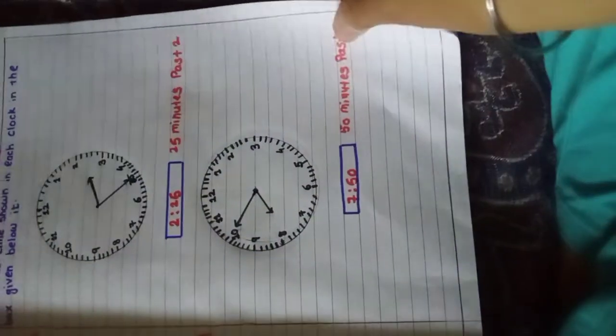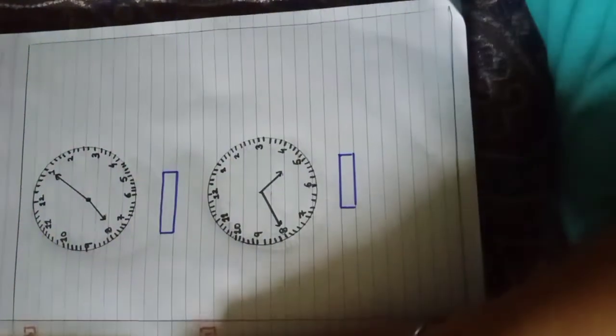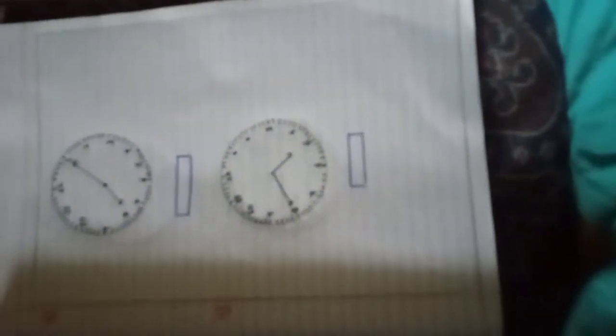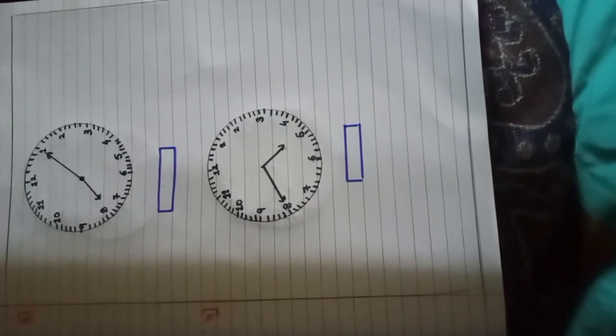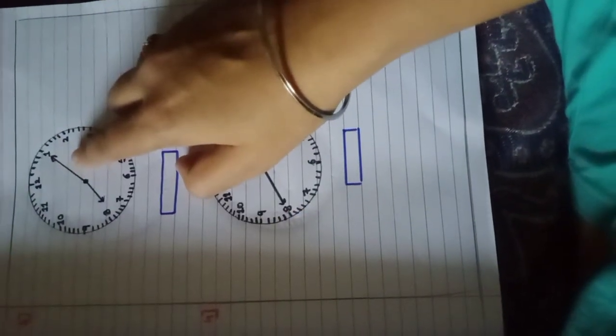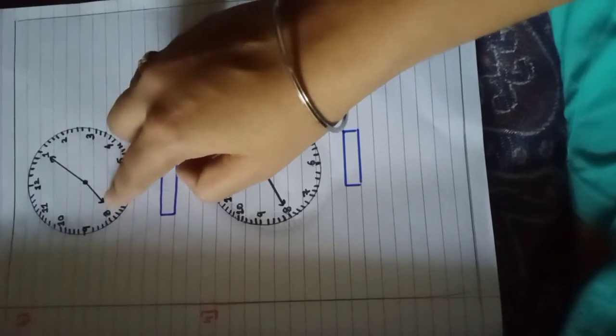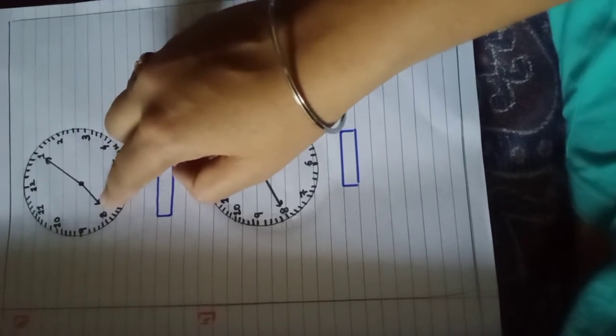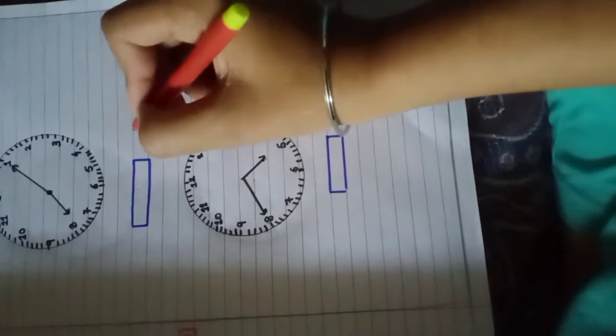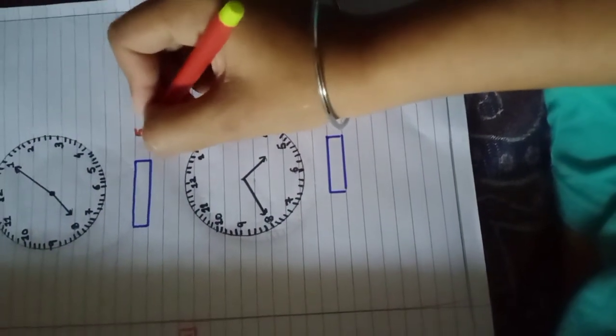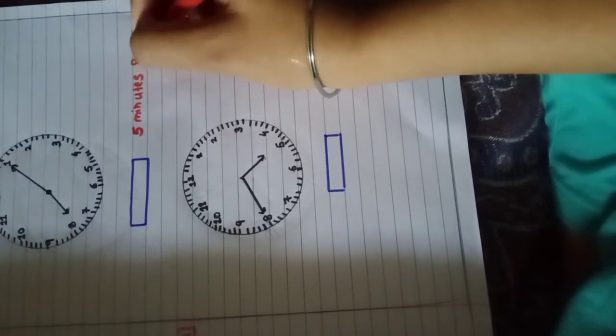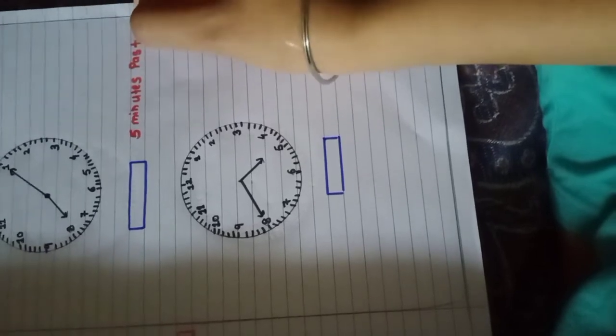Now we will see the third sum. See here in this clock. It is very easy. You tell me, what is the time? Yes, the hour hand is on the 8 and the minute hand is on the 1. So 1 means 5 minutes, 5 minutes past 8.